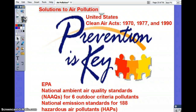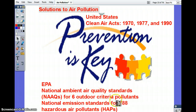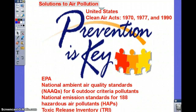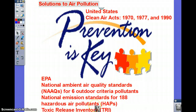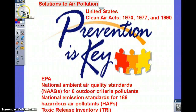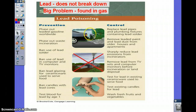Primary solutions to air pollution started in the 1970s. The EPA established National Ambient Air Quality Standards for six outdoor pollutants and set emission standards for 188 hazardous air pollutants. These acts still allow some leeway — companies can buy emission rights from another company not using their full allotment and continue to emit their specific pollutant.